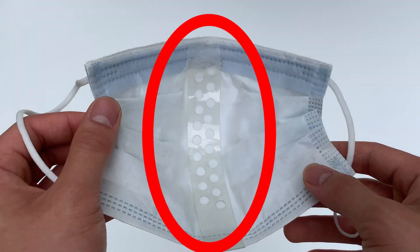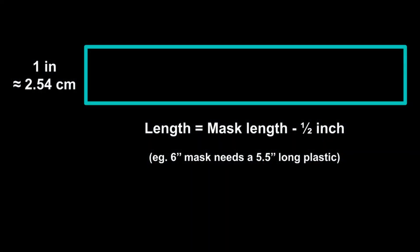The plastic will go across the mask, starting below the nose wire. Therefore, the plastic is one inch wide and slightly shorter than the mask length. If the plastic sticks out of the mask when you tape it, you can cut it shorter.